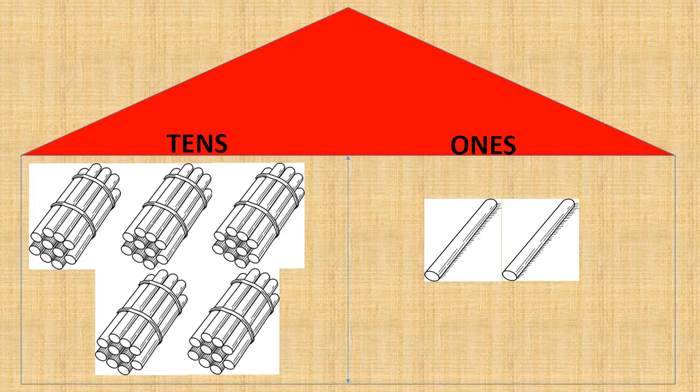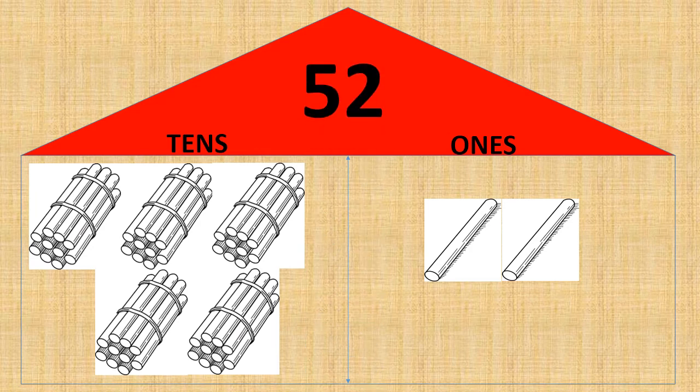Let's count the bundles in tens. One, two, three, four, five. So we have five bundles of tens in tens place. That means we have five tens. And in ones place, we have one, two — two ones. So five tens and two ones gives us the number fifty-two.